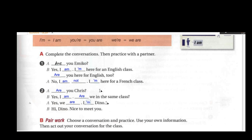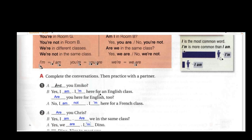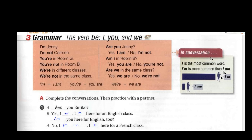Now you have to practice with a partner. Remember: 'I'm' equals 'I am,' 'you're' equals 'you are,' 'we're' equals 'we are.' 'I'm' is more common than 'I am' in conversation. Guys, thank you so much for watching this video. Please subscribe, share with your friends, and see you in the next unit.